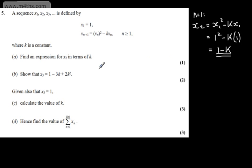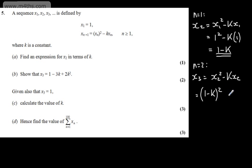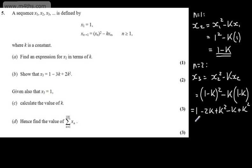In part B, for two marks, we need to show that x₃ = 1 − 3k + 2k². When n = 2, x₃ = x₂² − k·x₂. Substituting our expression for x₂ gives (1 − k)² − k(1 − k). Expanding: 1 − 2k + k² − k + k² = 1 − 3k + 2k², as required.